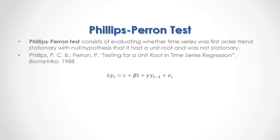As a formula, we have that current period data difference is equal to a constant plus a beta coefficient multiplied by a trend variable. This trend is a sequence from 1 all the way into the number of observations, plus a gamma coefficient multiplied by previous period's data, plus the regression forecasting errors or residuals.